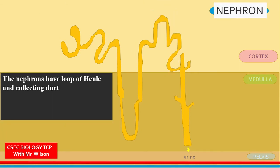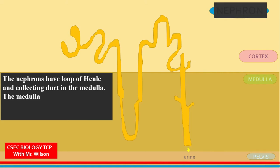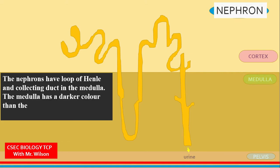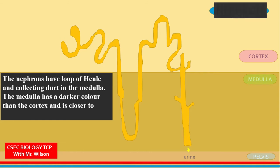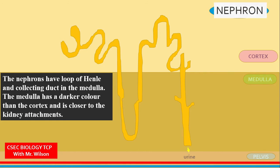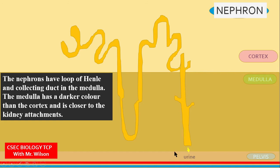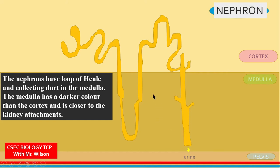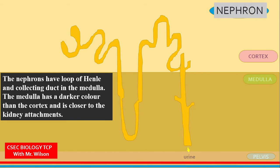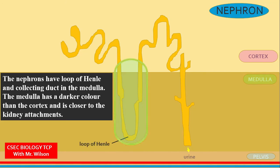The nephron also has the loop of Henle and the collecting duct in the medulla. The medulla is darker in color than the cortex and is closer to the attachment on the kidney, where you have the pelvis and the blood vessels. Can you identify the loop of Henle and the collecting duct? Let's check: loop of Henle, collecting duct.